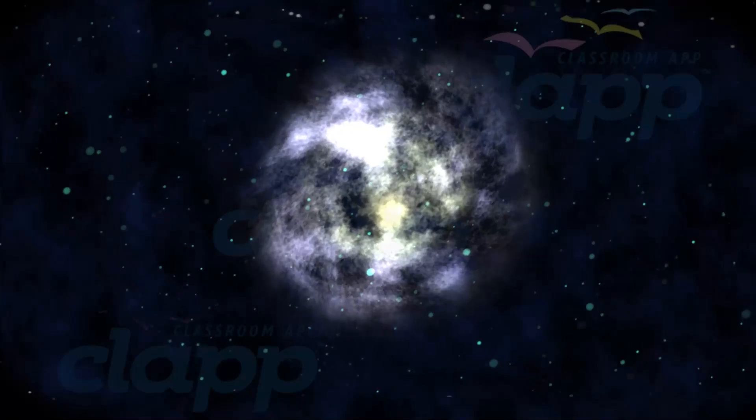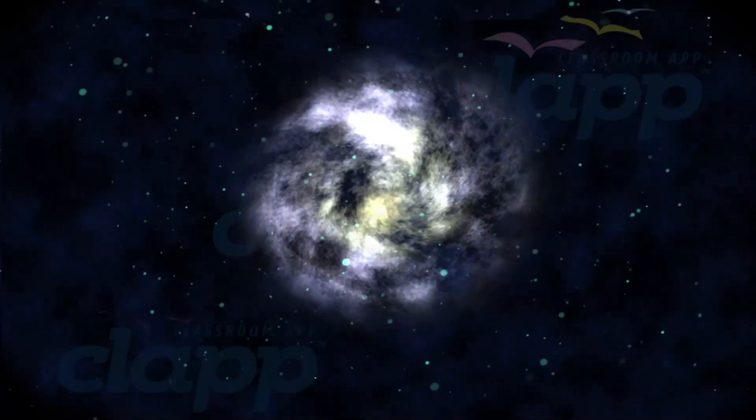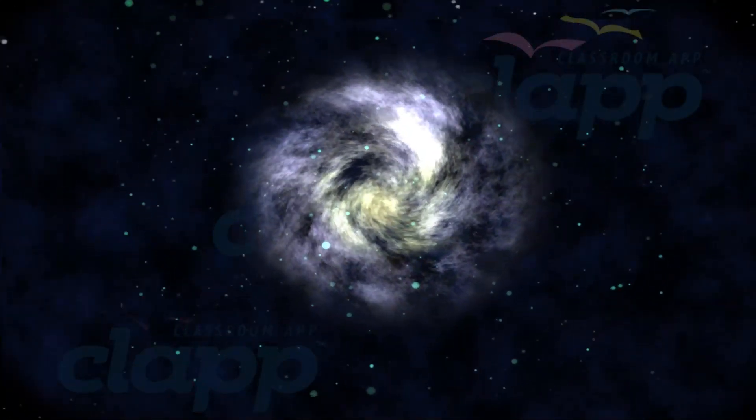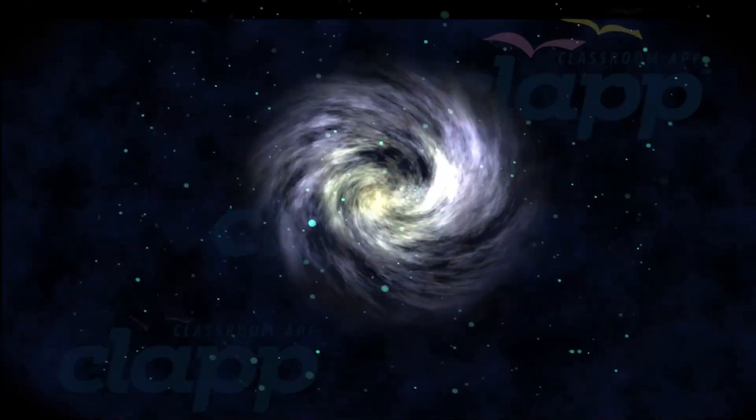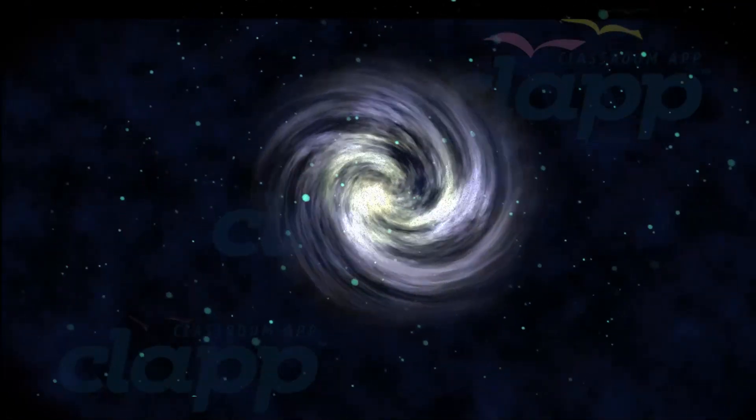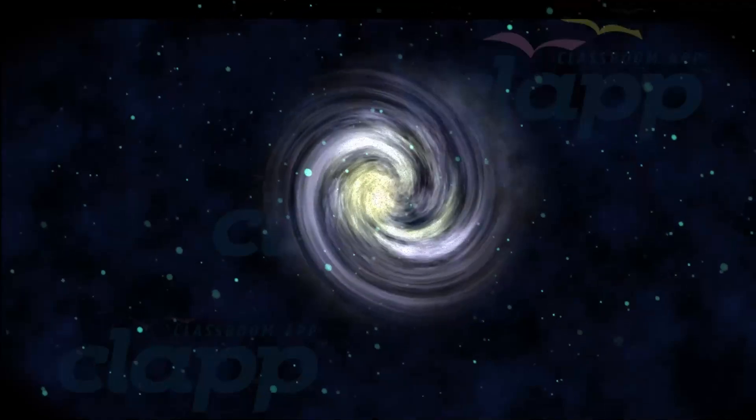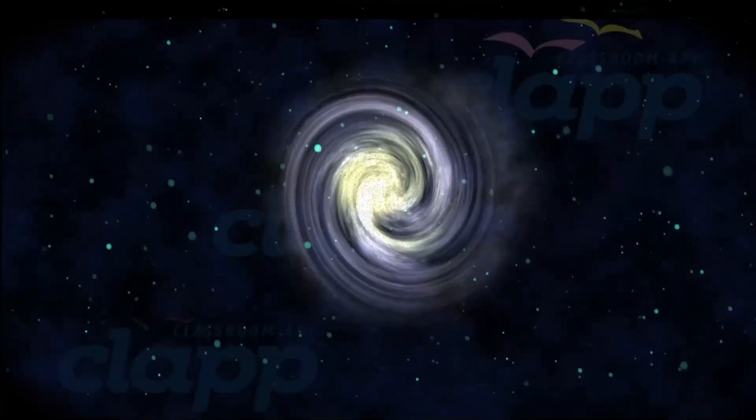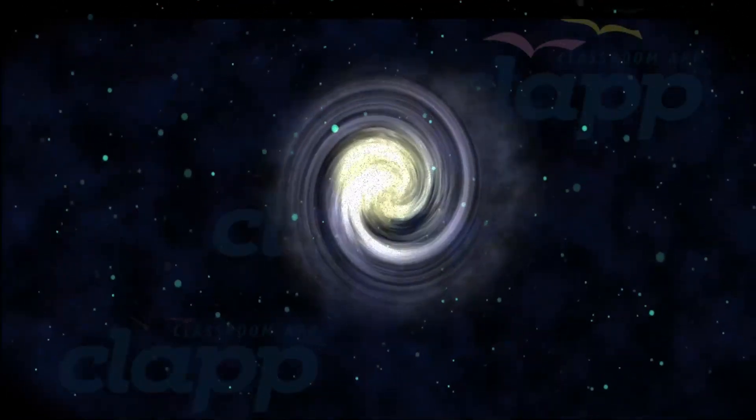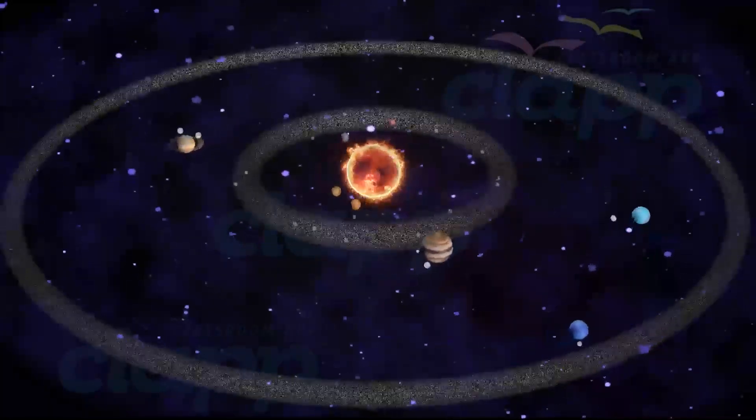The Sun formed approximately 4.6 billion years ago from the gravitational collapse of matter within a region of a large molecular cloud. Most of this matter gathered in the center, whereas the rest flattened into an orbiting disk that became the solar system.